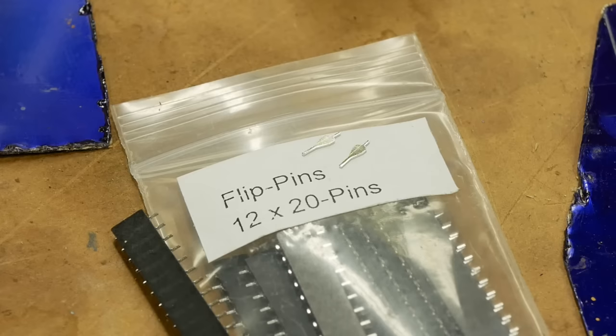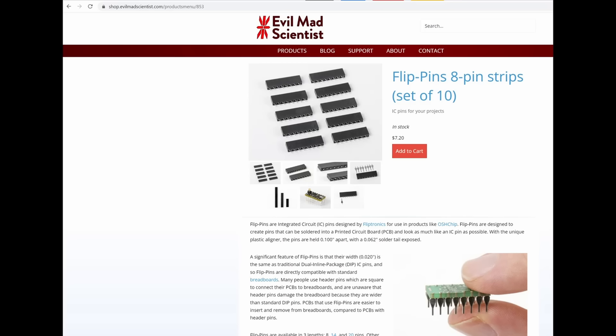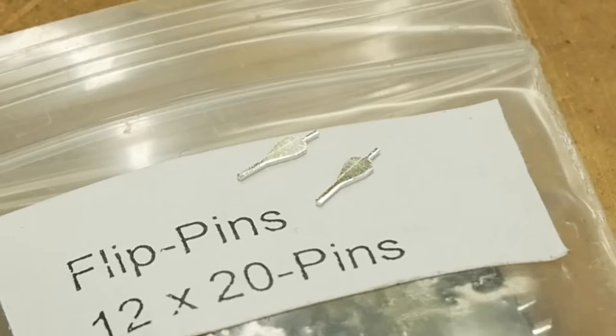Another example of a real product that benefits from this process are these flip pins. These are dip pins that you can solder onto your project to make it work like a dip chip package. So instead of using tenth inch header pins, which are actually not the right size and can damage breadboards, these are real dip sized pins you can add to your project. And normally these would be stamped metal in high production, but for niche use like this, they are made photochemically.